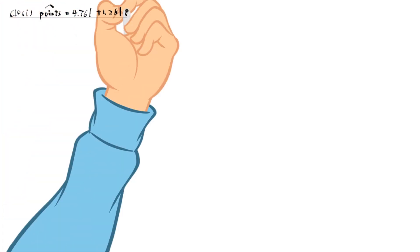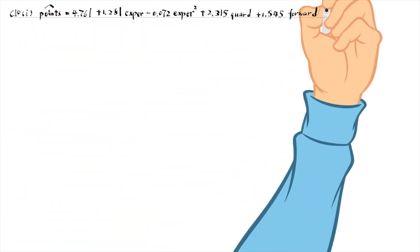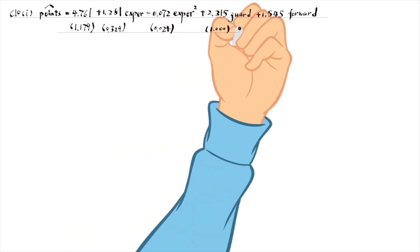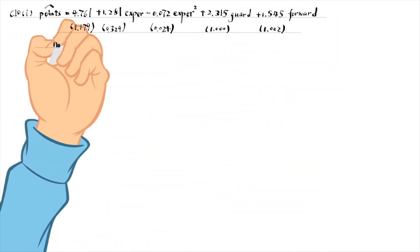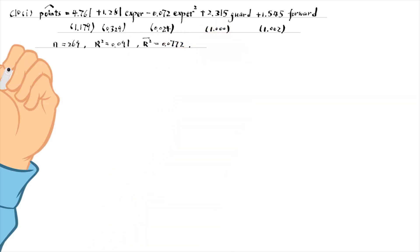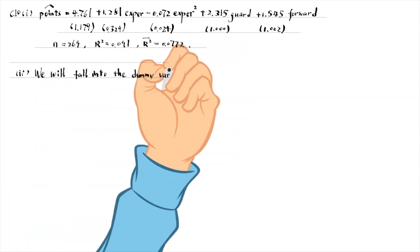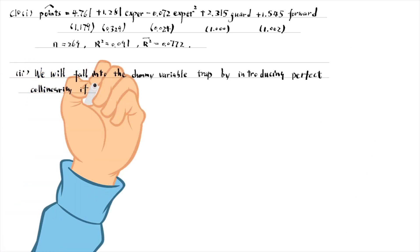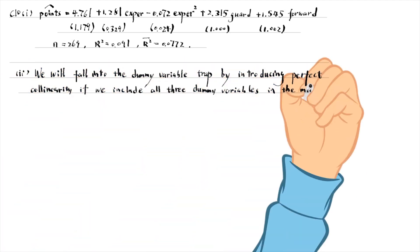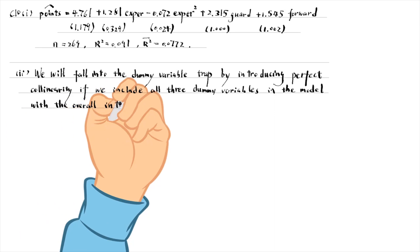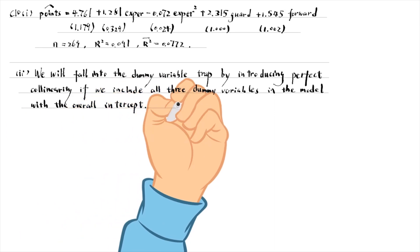The estimated equation is as follows. For part 2, we will fall into the dummy variable trap by introducing perfect collinearity if we include all three dummy variables in the model with the overall intercept.